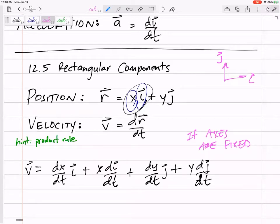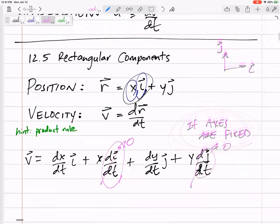then what happens with i's and j's if we fix our axes? What would the derivative of i with respect to t be? The time rate of change, it's not changing. The derivative of a constant is zero. So these two terms, if our axes are fixed, those two terms are zero.